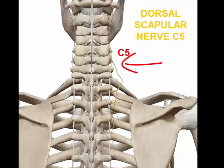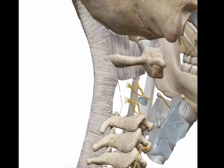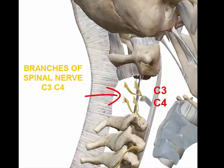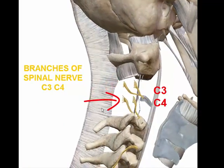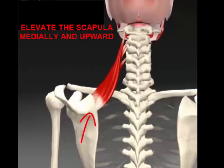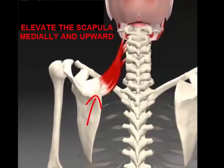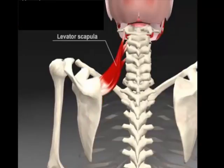The nerve innervation is the dorsal scapular nerve C5 and direct branches from the spinal nerve C3 and C4. The actions would be to elevate the scapula medially and upward.